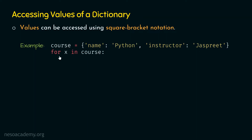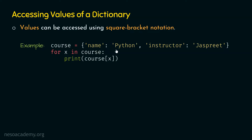For this purpose, we will use the same for statement: for x in course. But now the print function will be updated to course[x] — within square brackets, we are passing x. We know that each value of this dictionary can be accessed using square bracket notation, where we pass the key whose value we want to access. This variable x will first receive the key name, and at runtime, x will be replaced by name, so course[name] gives us the value python.